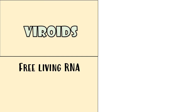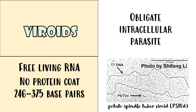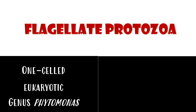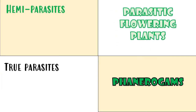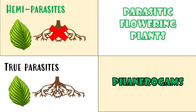Viroids are free-living RNA that lack a protein coat, usually 246 to 375 base pairs, and are obligate intracellular parasites. Flagellate protozoa are one-celled eukaryotic microscopic organisms that move by flagella. Phanerogams or parasitic flowering plants can be hemiparasites or true parasites. Hemiparasites have true leaves but no true roots, and can photosynthesize but depend wholly on the host plant for water and minerals. True parasites possess no or little chlorophyll, have no true roots, and depend entirely on their hosts for food, water, and minerals.